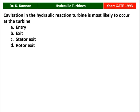Cavitation will occur. Cavitation is the formation of water bubbles or air bubbles in the flow. This is due to the change in pressure and temperature conditions in the hydraulic turbine. Normally in the hydraulic turbine, cavitation will occur at the rotor exit, whereas in the centrifugal pump it will occur at the entry where the pressure is very low.